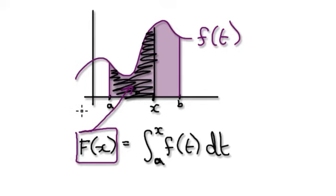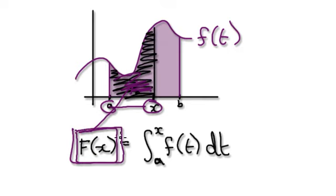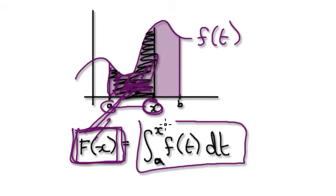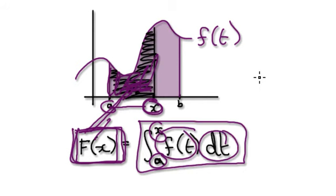This is not the full theorem yet; I will continue in the next video. Just bear in mind that with the Fundamental Theorem of Calculus 2, we are really concerned about the area from a to x. Let's call this area capital F of x — x can slide back and forth — and this area can be written as the integral from a to x of the function dt.